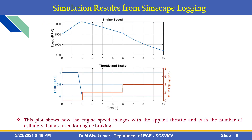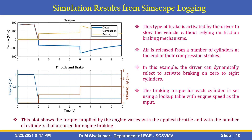By using Simscape logging, we can plot the engine speed versus throttle and brake. This plot shows how the engine speed changes with the applied throttle and with the number of cylinders used for engine braking. The next plot shows the torque supplied by the engine varies with the applied throttle and with the number of cylinders used for engine braking. This type of brake is activated by the driver to slow down the vehicle without relying on friction braking mechanisms. Air is released from the cylinders at the end of their compression strokes. The driver can dynamically select to activate braking on 0 to 8 cylinders. The braking torque for 8 cylinders is set up using a lookup table with engine speed as the input.